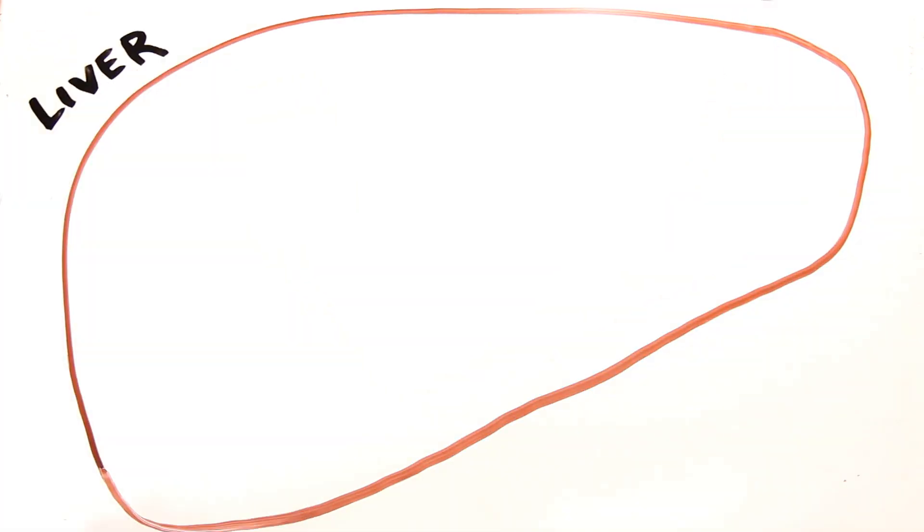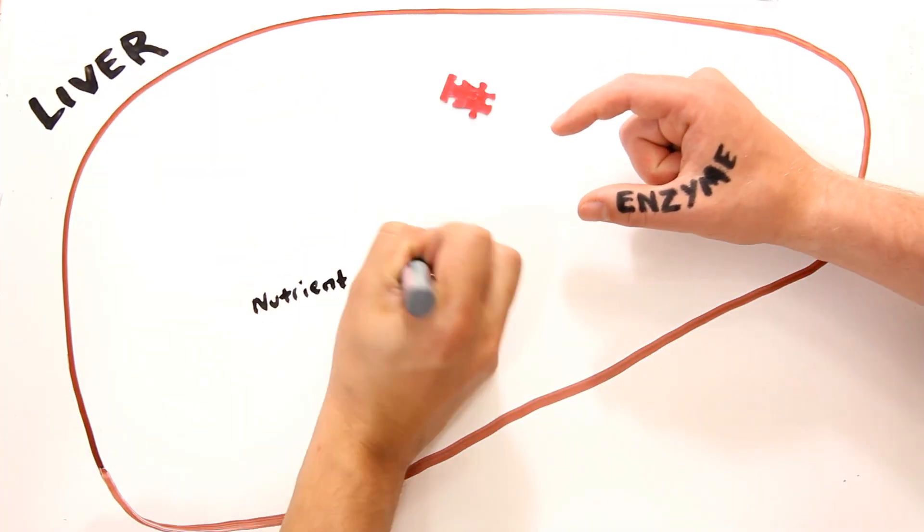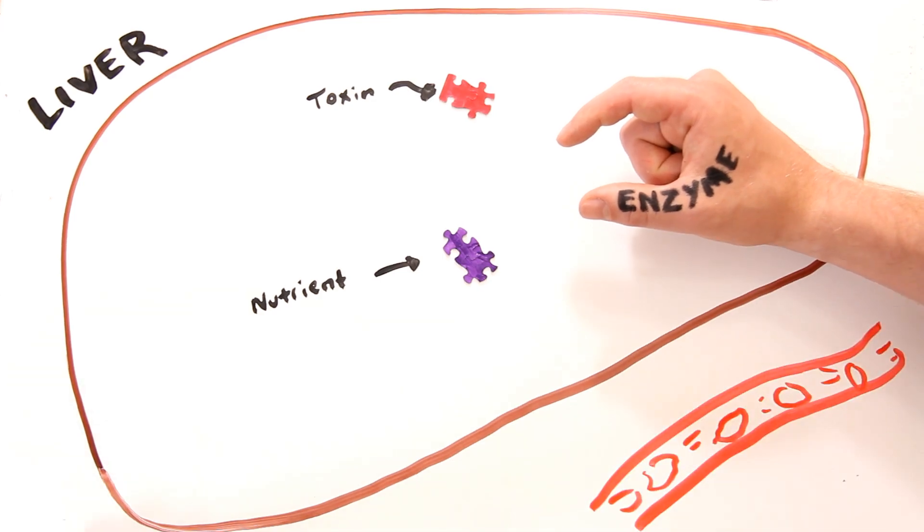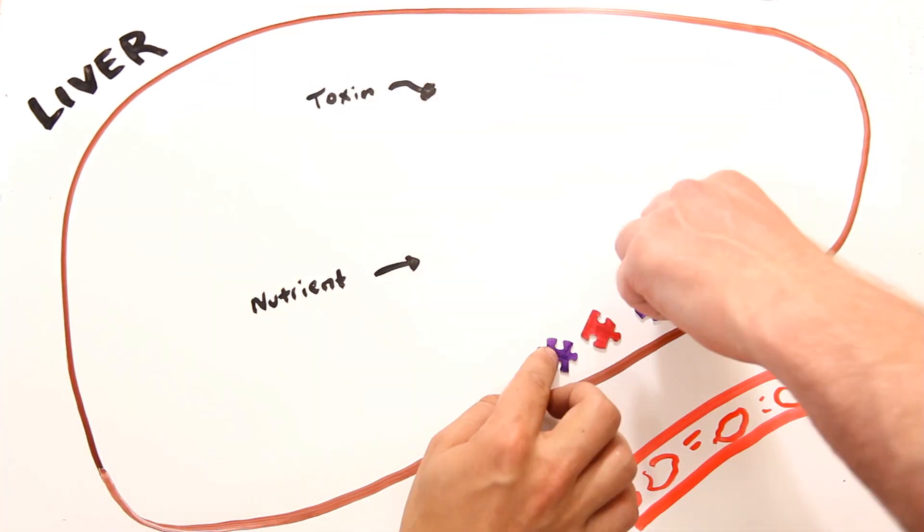In the liver, enzymes are used to help break down and process nutrients, but also remove any toxins when need be. After being processed by the liver, the products are now safe to enter the whole body's bloodstream.